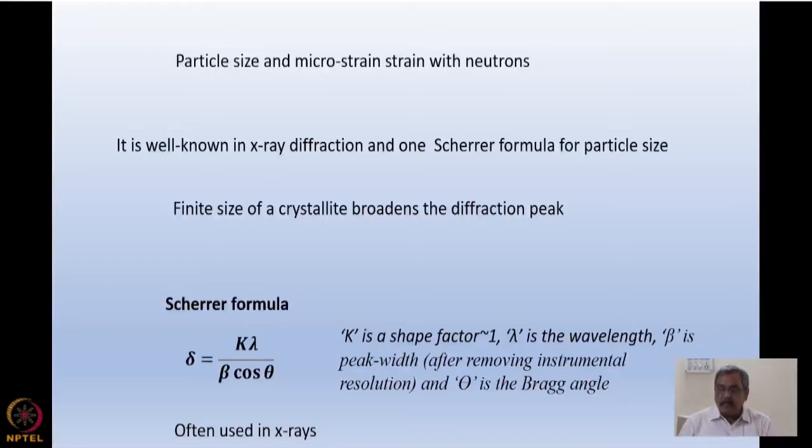We often use in X-ray diffraction what is known as a Scherrer formula. So the finite size of a crystallite broadens the diffraction peak. Finite size means the crystallite is small. When we say that the Bragg diffraction peak is a delta function, actually it is not a delta function.